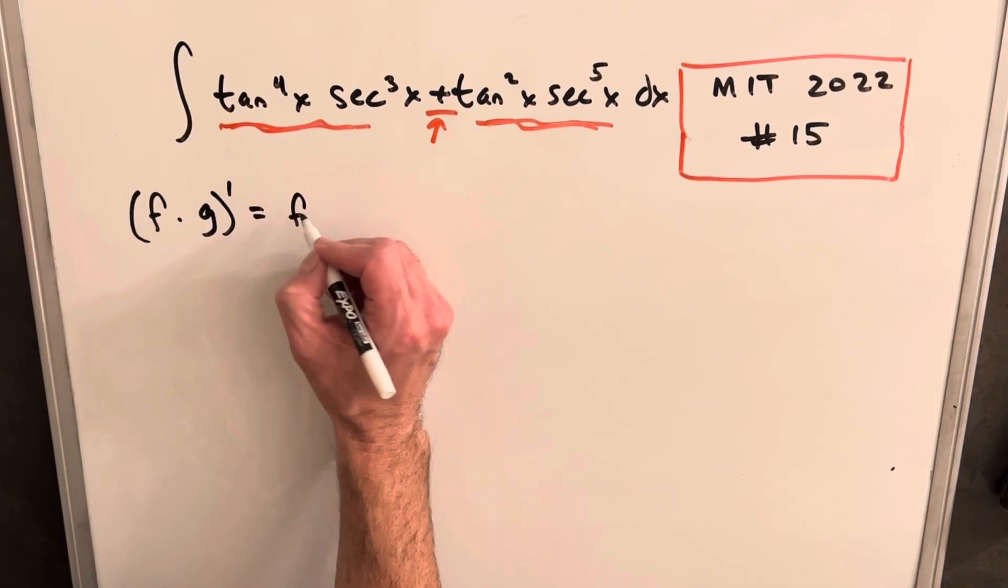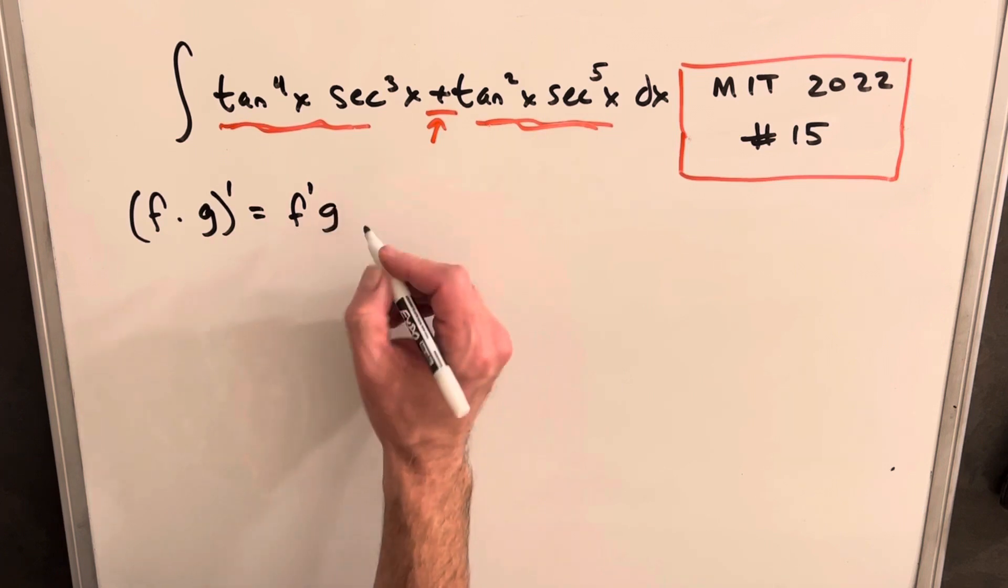So the product rule tells us if we want the derivative of two functions, f and g, we're just going to get the derivative of the first one times the second one plus the first one times the derivative of the second one. And so again, going back, could these be two derivatives? Because if that's the case, then when we take the integral of this, we're just going to be left with f times g.